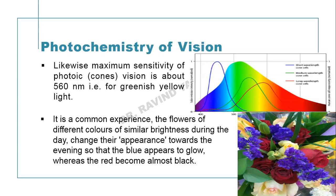It is a common experience that flowers of different colors but similar brightness during the day change their appearance towards evening — blue appears to glow whereas red becomes black. If you see a bouquet with different colored flowers at the same brightness level, at night the blue color glows more and red appears black. This is due to the behavior of rods and cones.